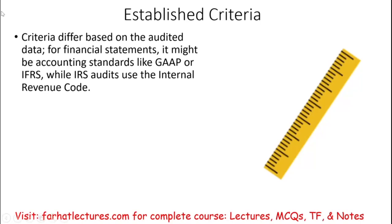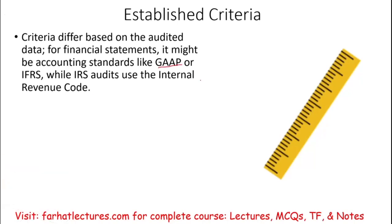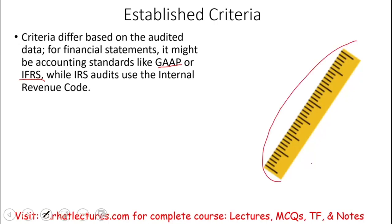For some audits your criteria could be, for example in the United States, generally accepted accounting principles — GAAP. If you are conducting an audit based on international standards, your established criteria is IFRS, the International Financial Reporting Standard. Bear in mind those are criteria for the audit, not the audit tools. What we follow when we conduct an audit is generally accepted auditing standards — that's totally different. If you are conducting an audit for the IRS, you will follow the IRS audit rules, depending on what your audit is.